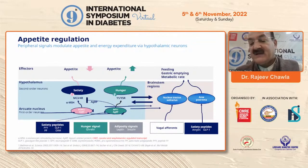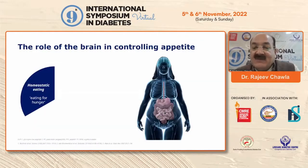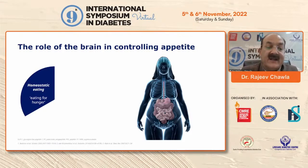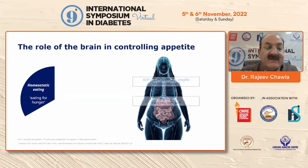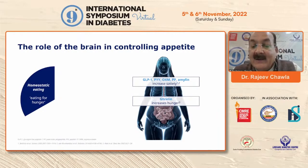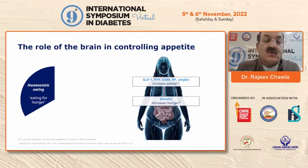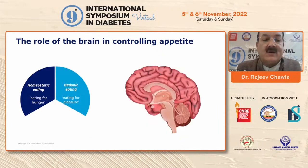That is how we use GLP-1 receptor agonists to reduce not only appetite through central mechanisms but also to delay gastric emptying. The role of the brain is very important in controlling appetite. There is homeostatic eating, which is actually eating for hunger, mediated through GLP-1 hormone, PYY, oxyntomodulin, and amylin — all of which increase satiety. But ghrelin increases hunger. So actually, if we are simply going with eating for hunger, we may not get obese at all.